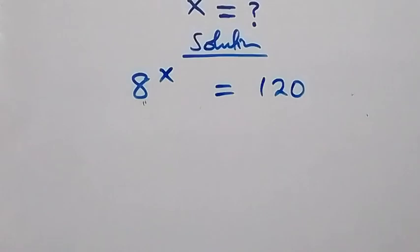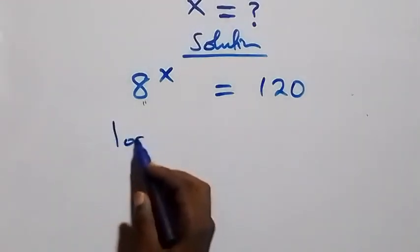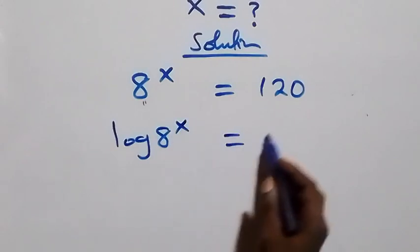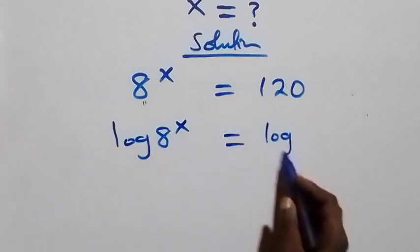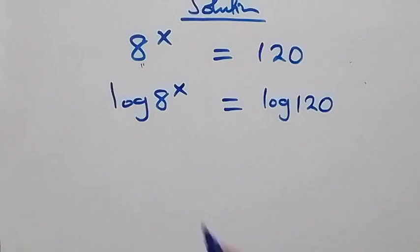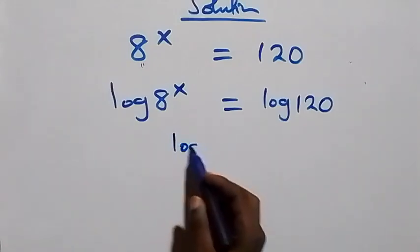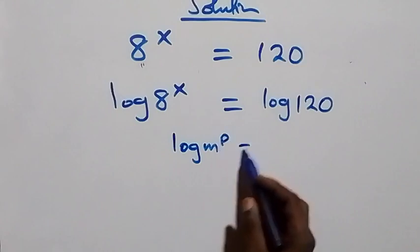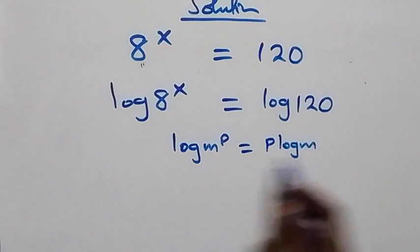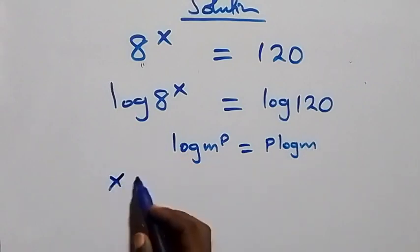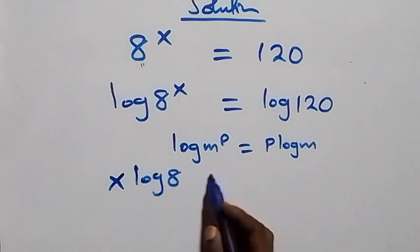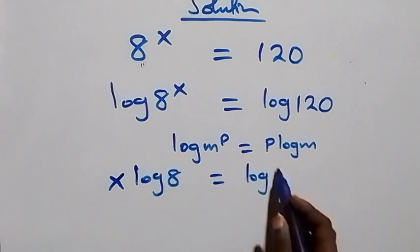We take the log on both sides: log of 8 raised to power x equals log of 120. Then we apply the power law of logarithm, where log m raised to power p can be written as p·log m. So we have x·log 8 equals log 120.